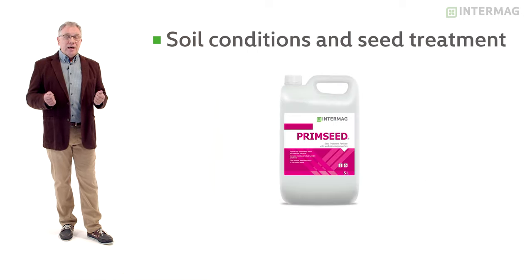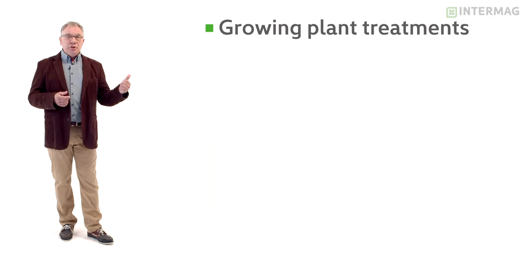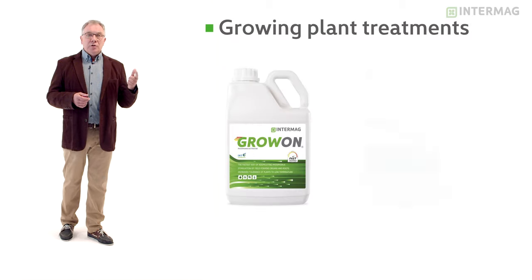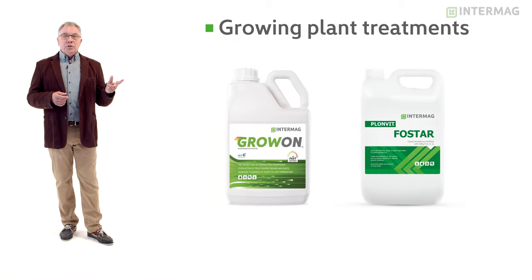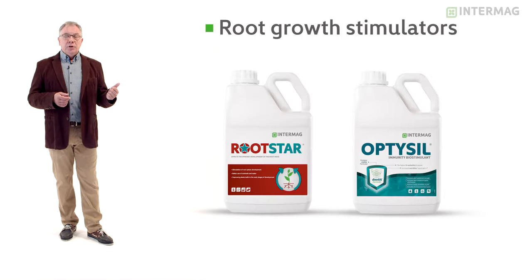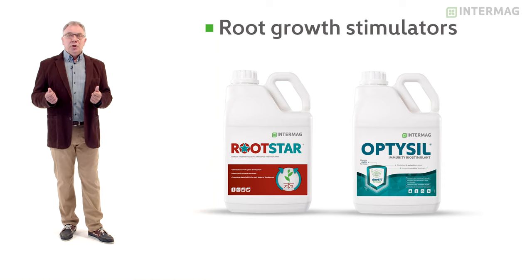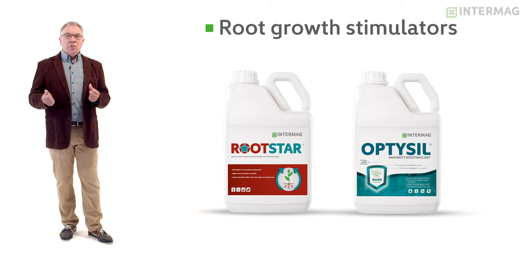The second step is related to already growing plants, means advanced plant nutrition based on GrowOn and Plonvit Fostar and root growth biostimulation based on two products RootStar and OptiSeal. In addition OptiSeal will increase the tolerance of plants to stress conditions like drought and diseases. If you would like to improve the conditions of root growth of your plants this is the solution.